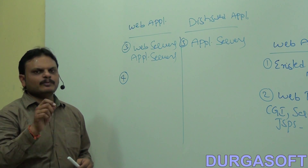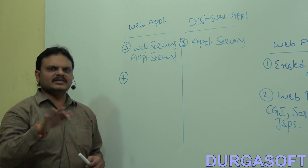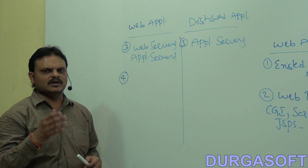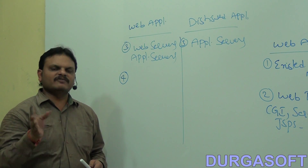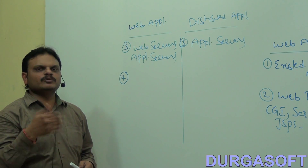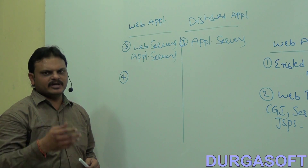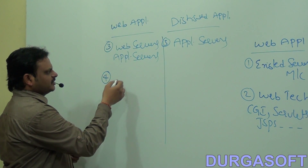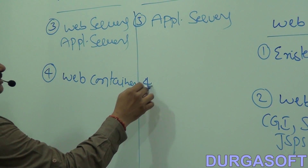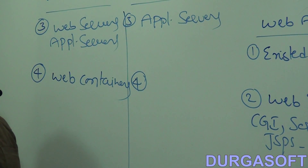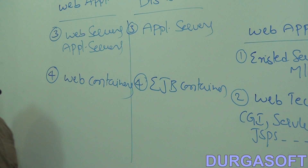In any server, there are generally two types of containers: a web container and an EJB container. All web components are executed by using the web container. Distributed components like EJB components are executed by using the EJB container. So web applications use web containers; distributed applications use EJB containers.